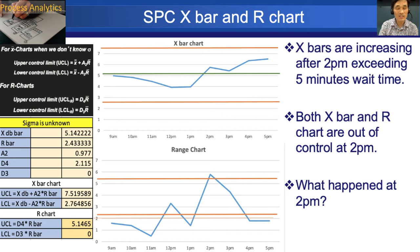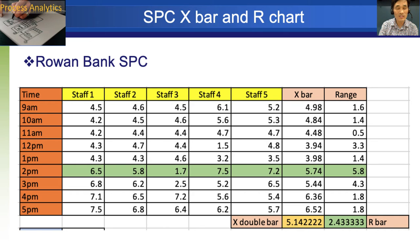So what can we learn from this statistical process control chart? First, we can learn that x bars are increasing after 2pm, exceeding five minutes wait time. So that's not a good thing. Second thing is both x bar and r chart are out of control at 2pm. Third thing is what happened at 2pm. So we may go back to the data itself, and see what happened. And we see that the range is out of control. And the reason might be because step four, wait time increase to 7.5, while step three, wait time decrease to 1.7. So it's good for step three to decrease the wait time to 1.7. However, step four increased the wait time. So it's not good. So we have to investigate and understand the situation.